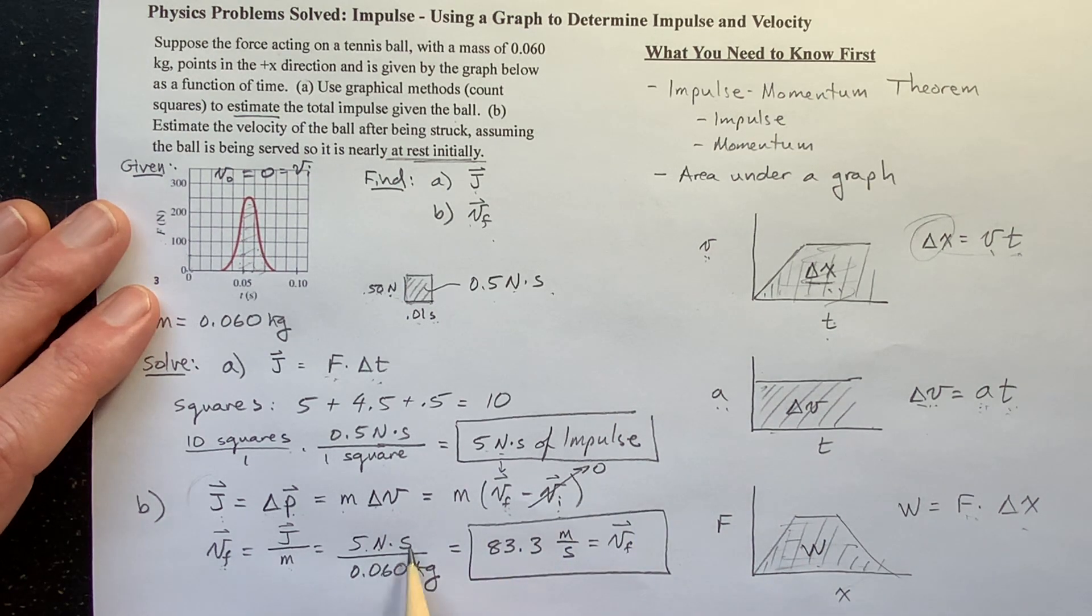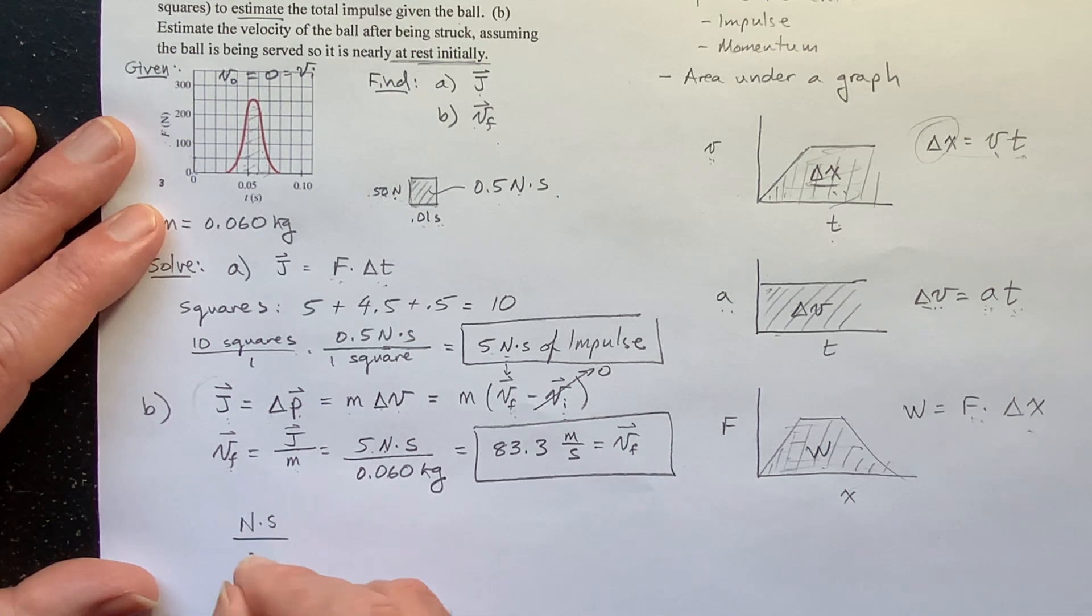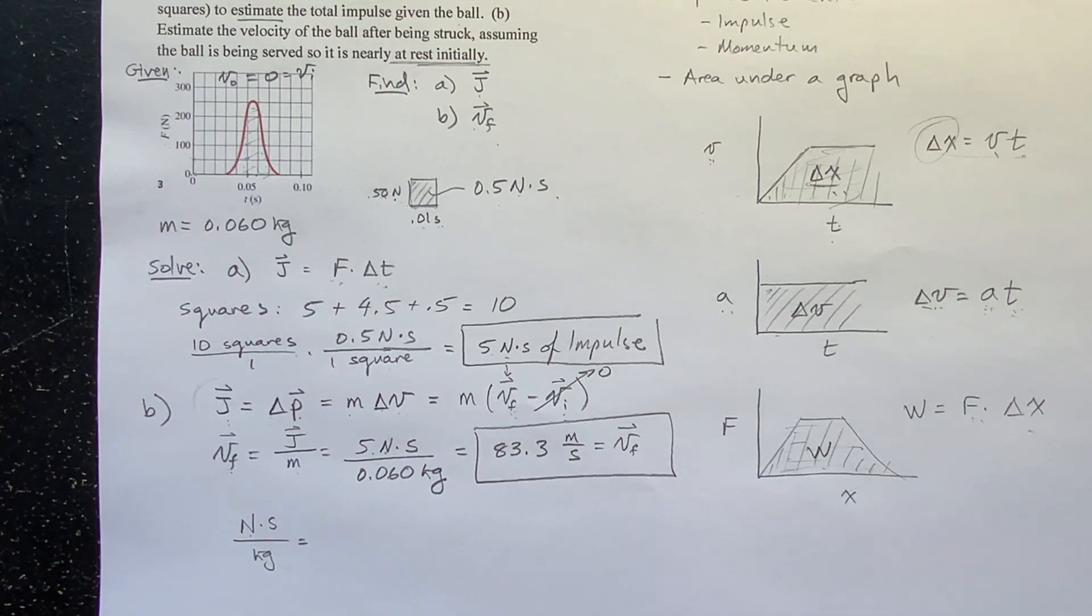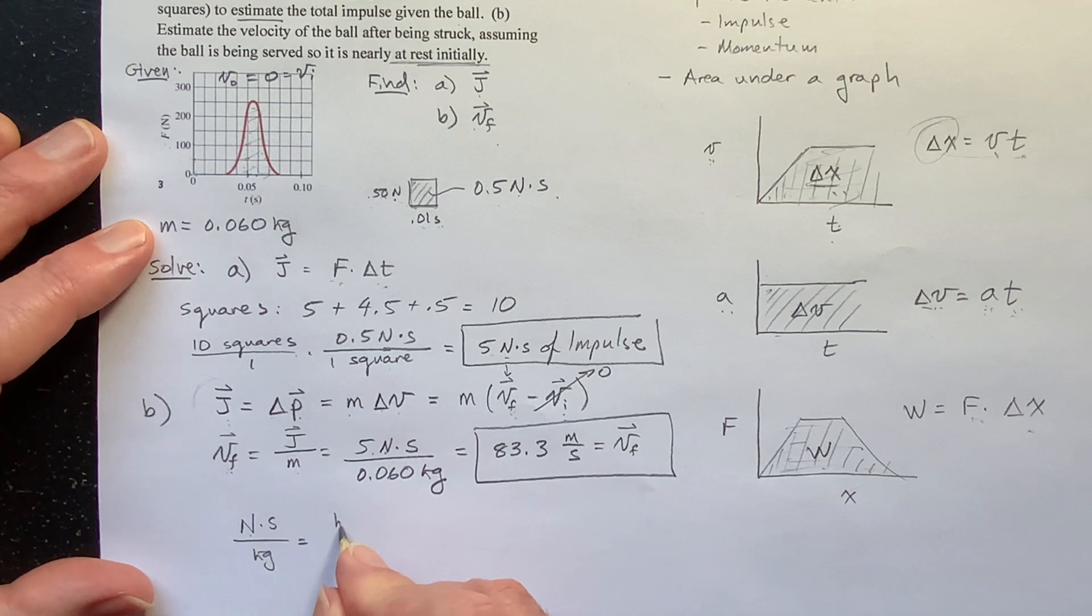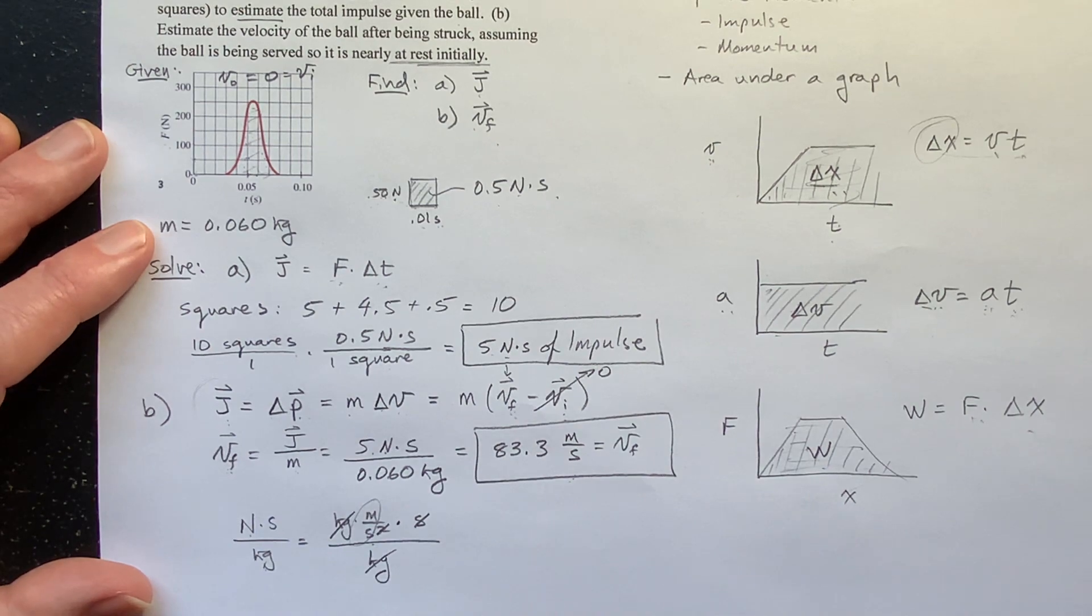Now, one thing, we have a Newton seconds per kilogram here. How do I get meters per second out of that? Let's check out those units. Well, we have Newton seconds per kilogram. Well, a Newton, remember, a Newton is force. Force equals mass times acceleration. So a Newton is mass times acceleration, kilogram meters per second squared, times seconds, divided by kilograms. And notice how the kilograms cancels the kilograms. The second cancels with the second squared. And I'm left with just meters per second, which is what my quantity is measured in. And there you go.